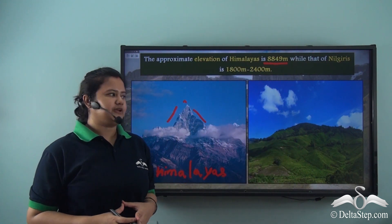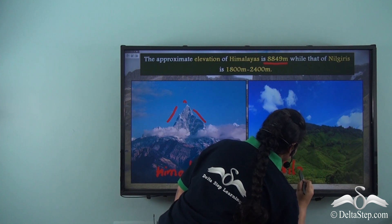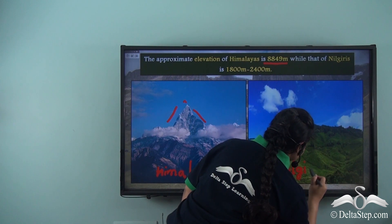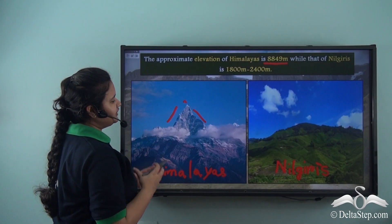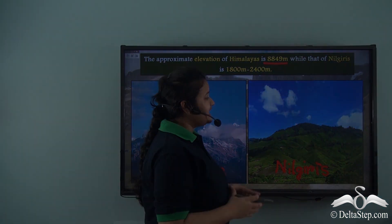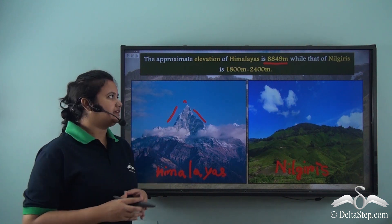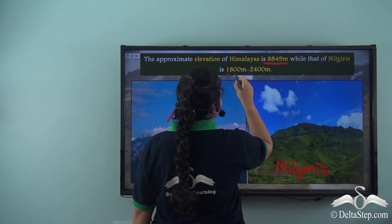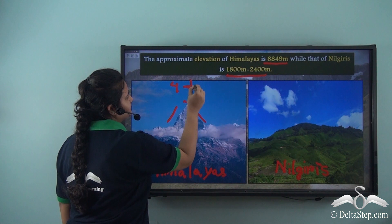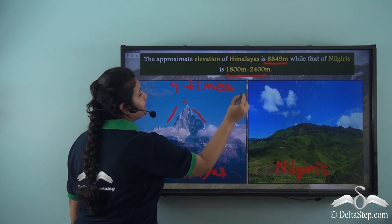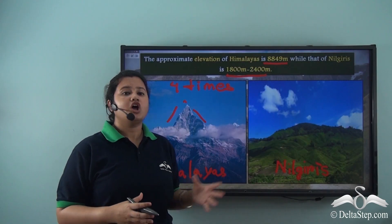Now consider the second picture. This picture is of Nilgiris. Now compare these two pictures. The height of the Himalayas is huge, while the Nilgiris have lower heights compared to the Himalayas. In fact, the approximate elevation of Nilgiris is 1,800 meters to 4,800 meters. In other words, the Himalayan range is 4 times taller than the Nilgiris. Now, why do we have such a difference in heights? Or why do the Nilgiris have such lower elevation? Let's find out the reason.